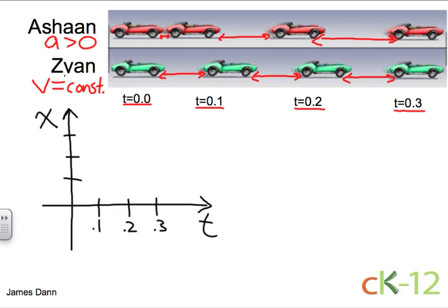Now, for Zion, he's covering the same amount of distance every time. So then we do it like this, and at point three, he'll be over here. This gives us a straight line.